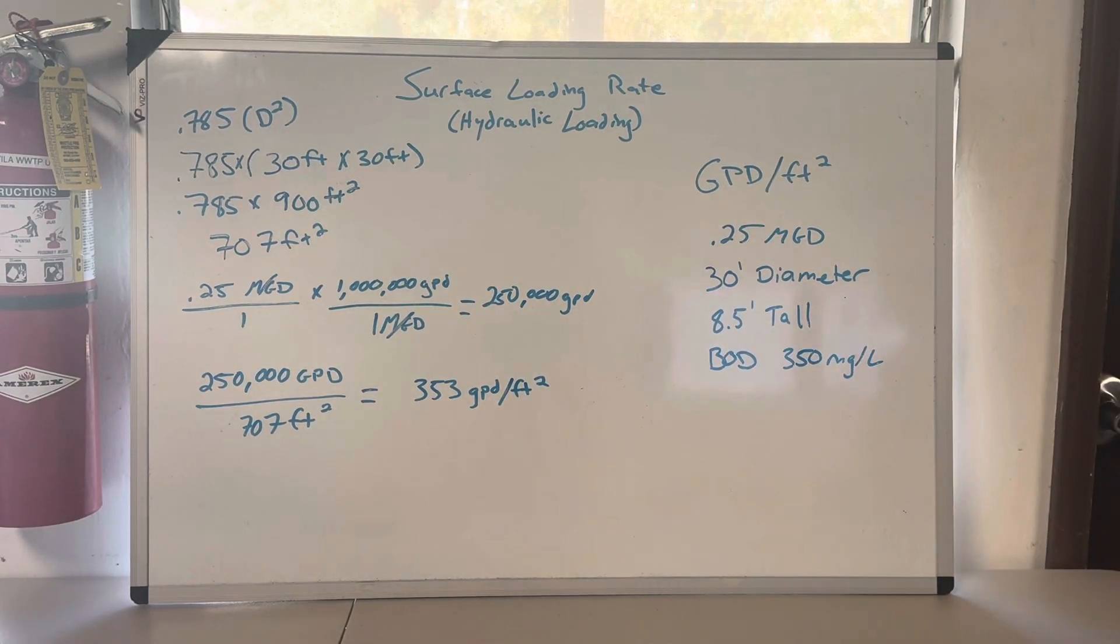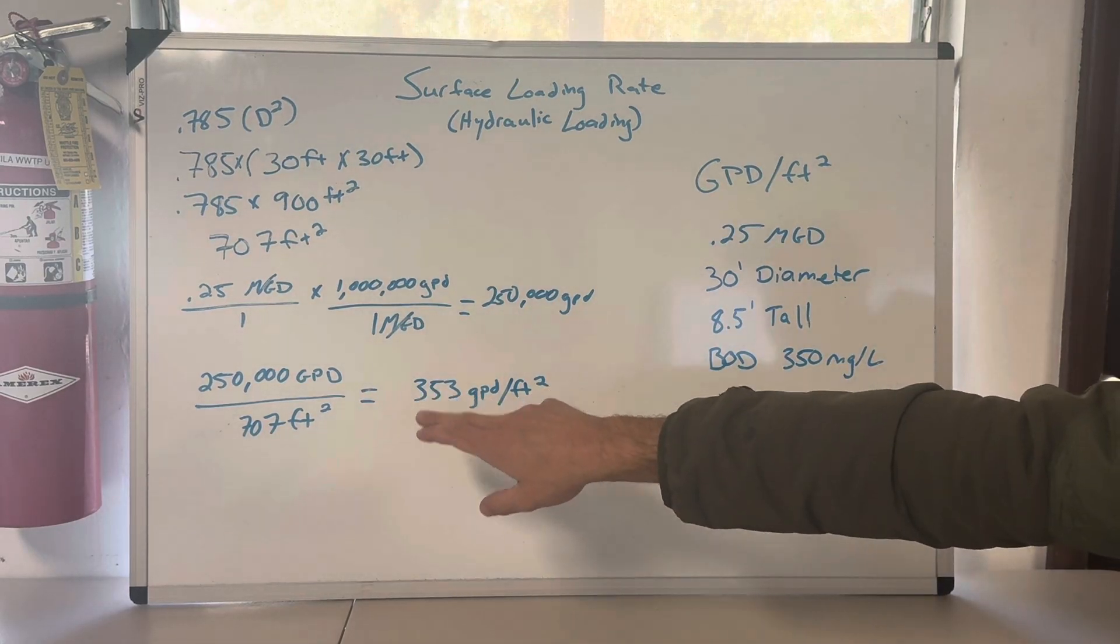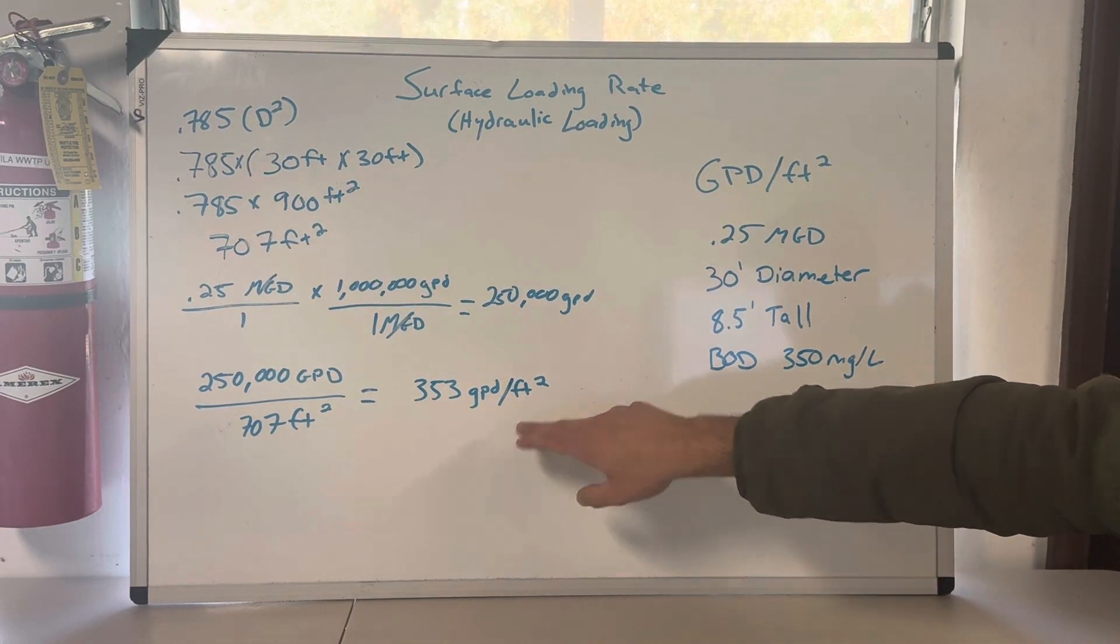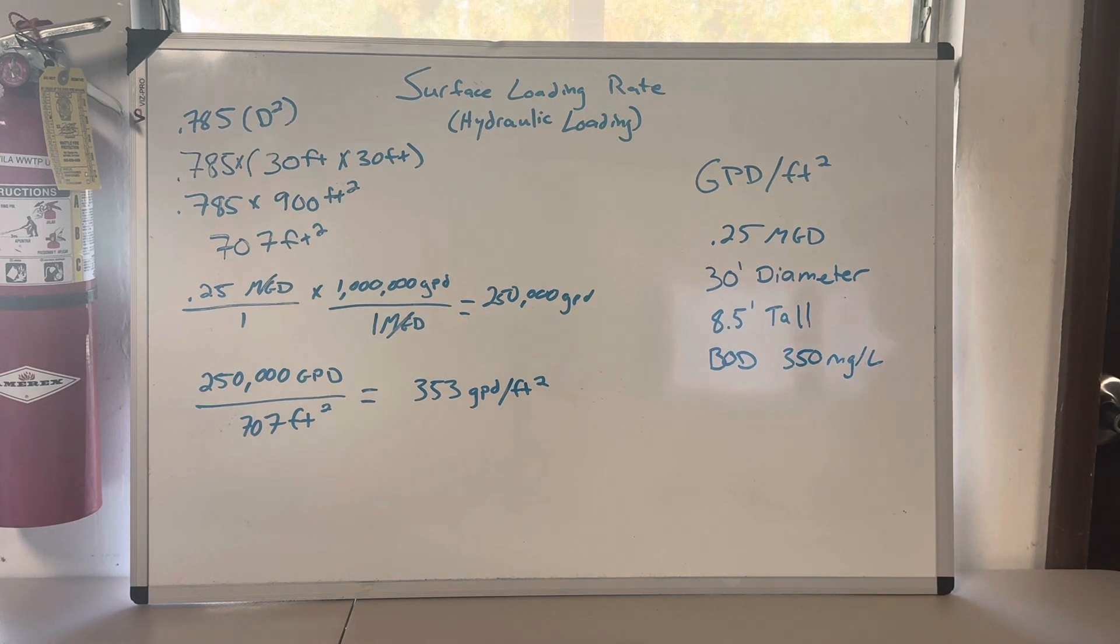Okay, 250,000 gallons per day divided by 707 square feet is 353 gallons per day per square foot, and we are done. That is a surface loading rate calculation for a clarifier.